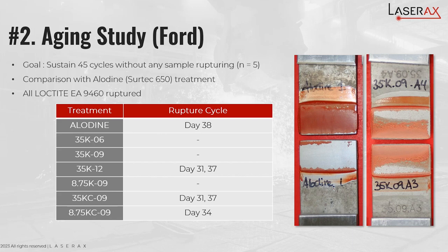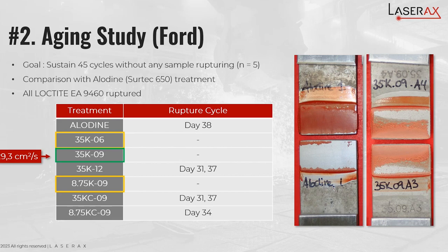These are all the treatments we put through the test. The label describes the recipe: the first number is the scan speed and the second number is the line spacing — so 16, 90, 120 microns in that case. The two last recipes with the 'C' designation had the oxide layer removed after texturing. We observed that three laser-textured recipes were able to sustain the full 45 aging cycles, while all the other ones had at least one or two ruptures. If we were to select the best one out of the three, we would take the fastest one at 21.3 cm²/s. We were able to demonstrate that laser texturing is a very reliable and good approach for adhesive bonding in automotive industry applications.